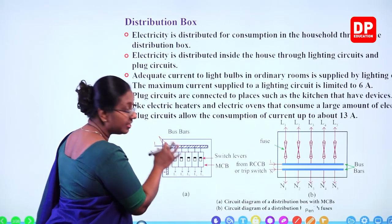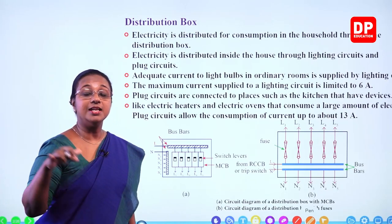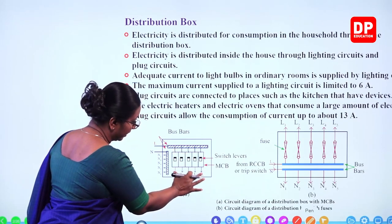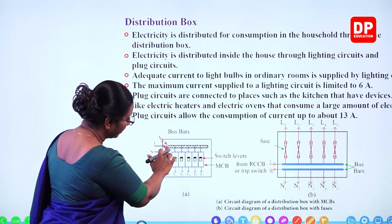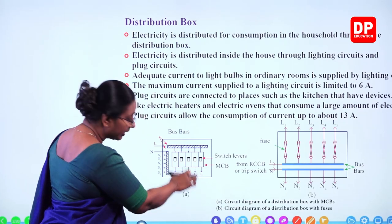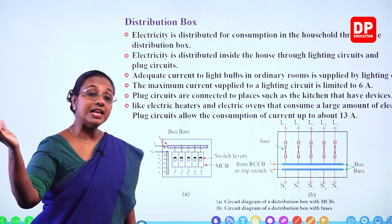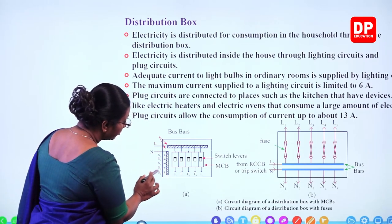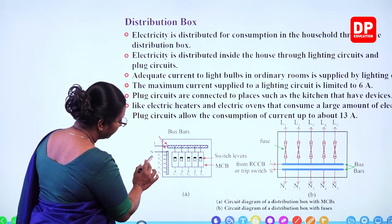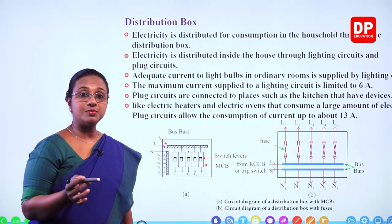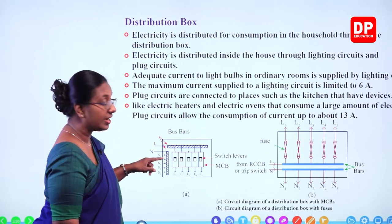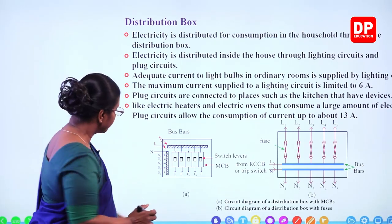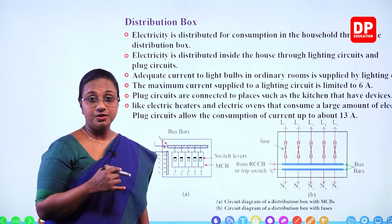The household is divided into different areas and different lines go to each area through these wires. The live wire from the bus bar is given to different parts of the house. Electricity flowing back from the different parts of the household returns and joins the neutral wires — N1, N2, N3, N4, N5 — depending on the number of miniature circuit breakers working. The neutral wire takes out the current, which completes the circuit. This distributes current throughout the household, divided into different sections.